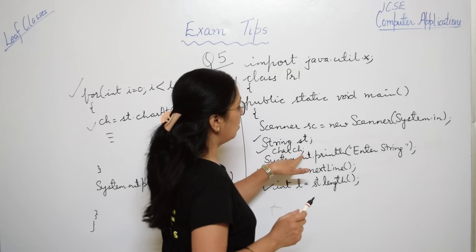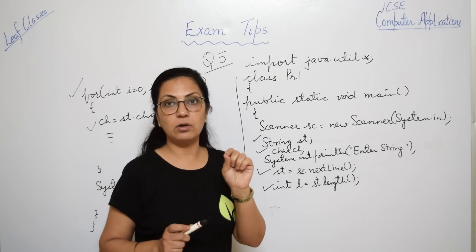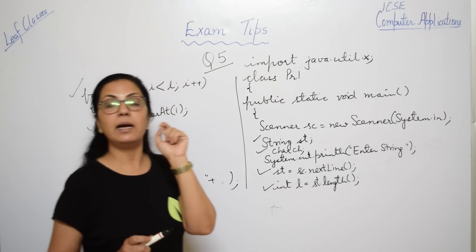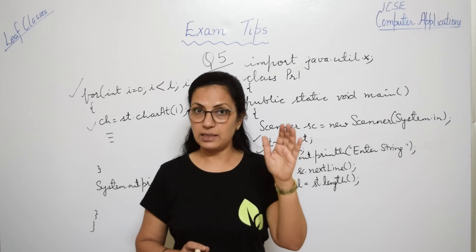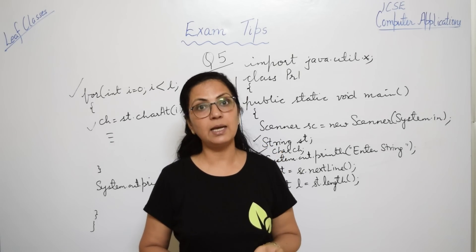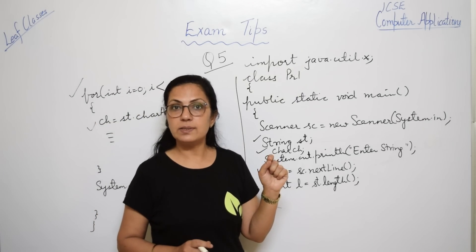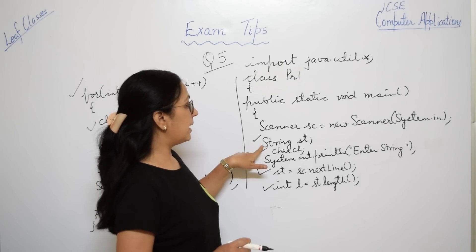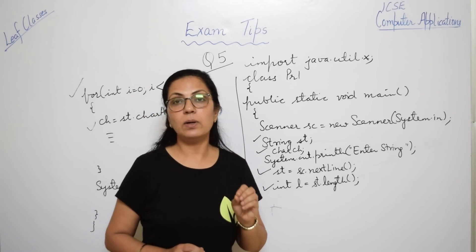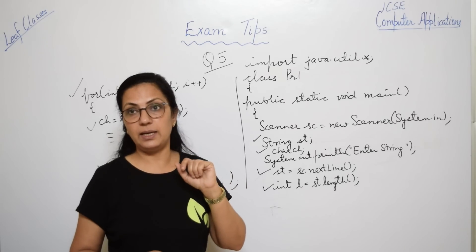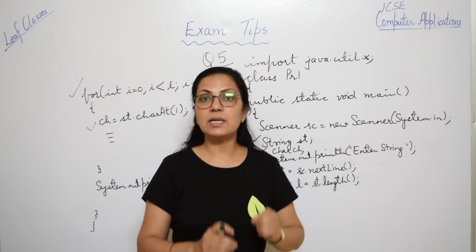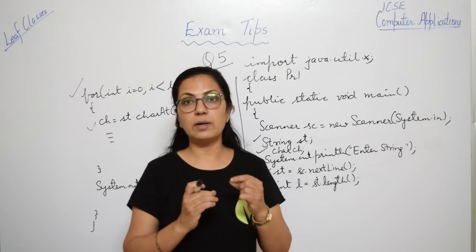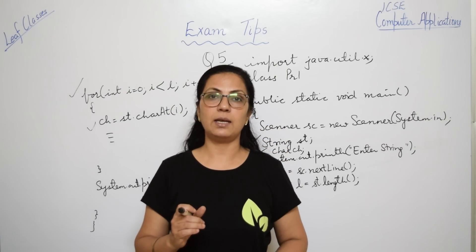Some common mistakes to avoid: check whether you have put a semicolon at the end of each statement. After a class name, never put a semicolon. After a for loop, never put a semicolon. After an if statement, never put a semicolon. After finishing each program, spend one minute quickly checking these things. Also, certain things are always written in uppercase — make sure what has to be capital is capital, and what has to be lowercase is lowercase. For example, the C in class must be capital; the i in import must not be capital.